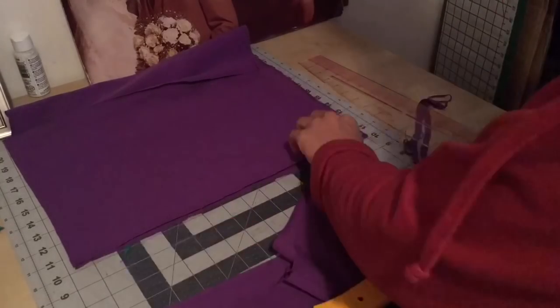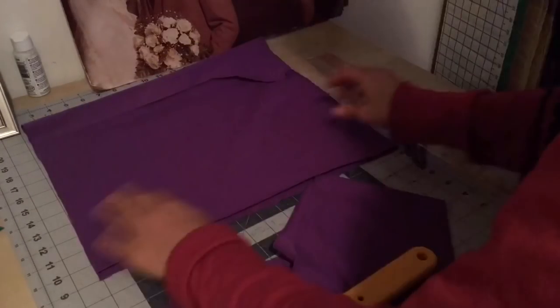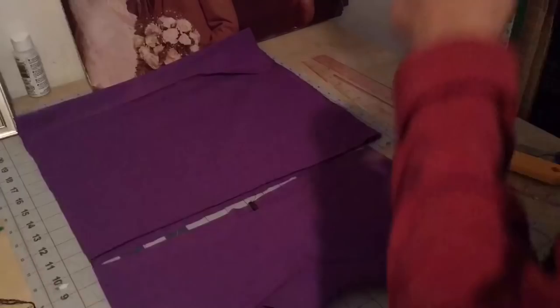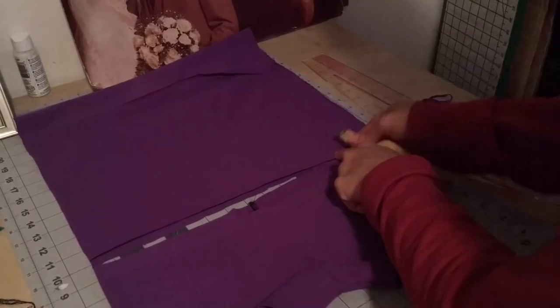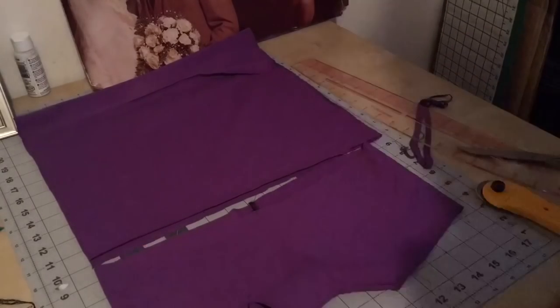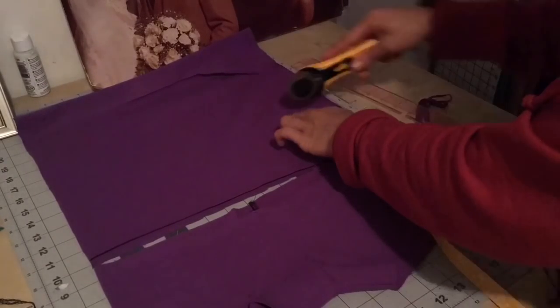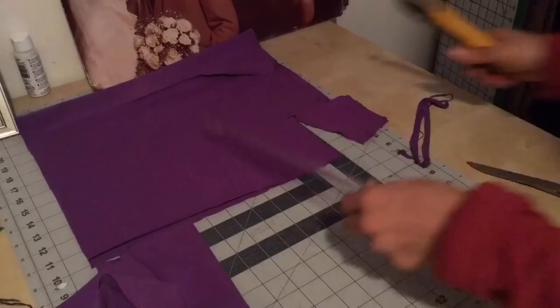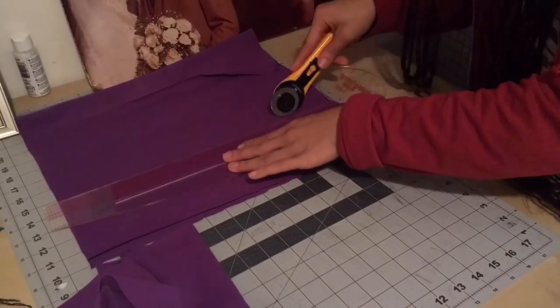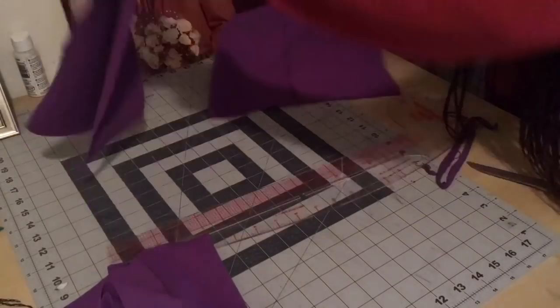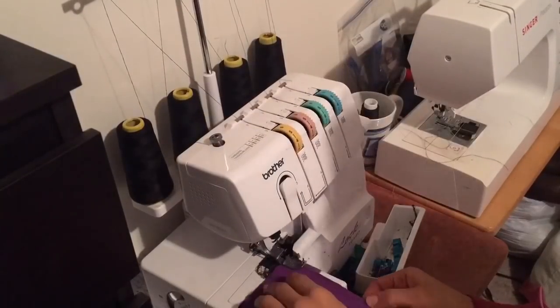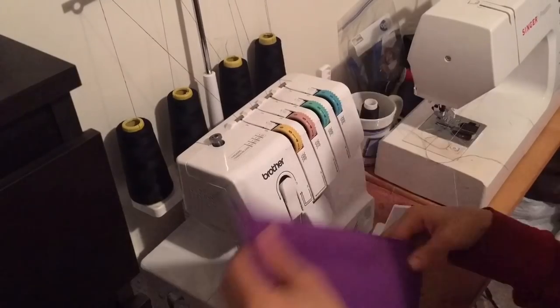Now we're going to make the waistband. I'm going to cut two pieces that is the length of your waist minus a half an inch, and you want the waistband to be three and a half to four and a half inches high. So it'll be your waist measurement by about four and a half inches. Then take that to the sewing machine and sew down both sides.